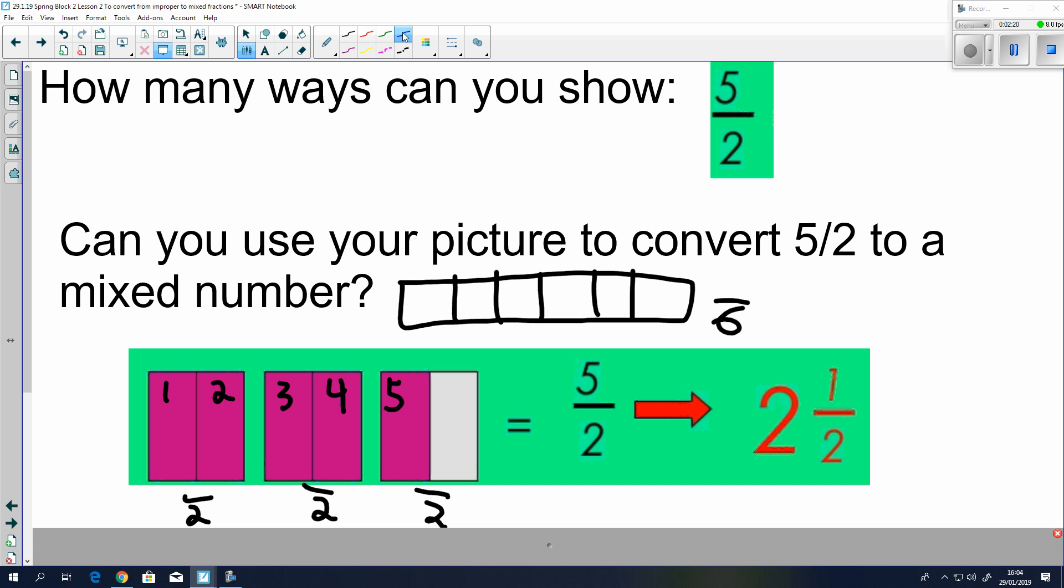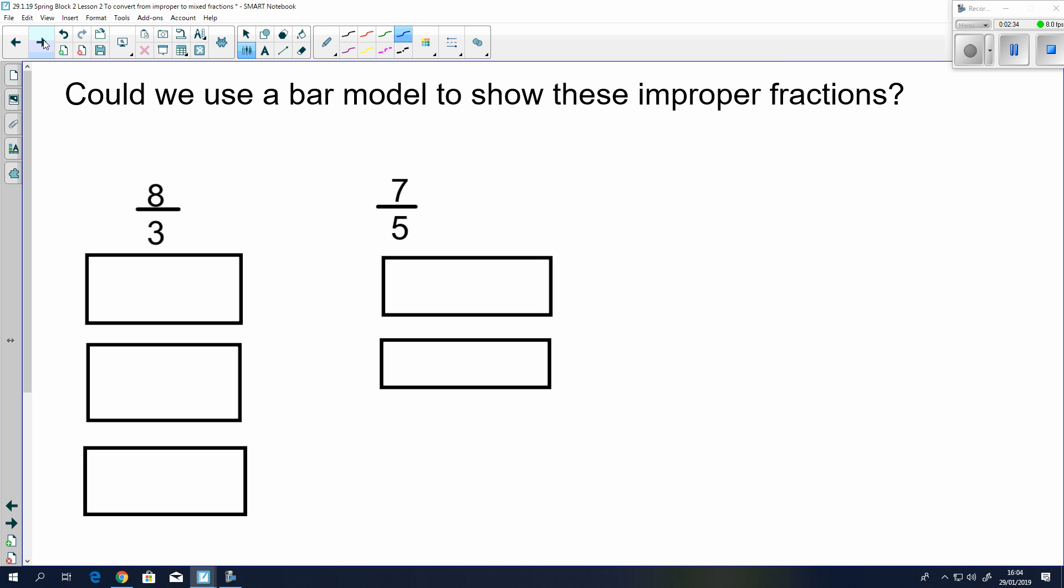And if we think about how much there is in total, you have 1 whole bar, 2 whole bars, and then 1 out of 2 halves covered in. Hence, the 2 and a half over here. Okay, could we use a bar model to show these improper fractions? Of course we can.